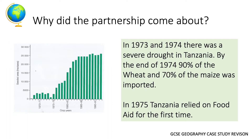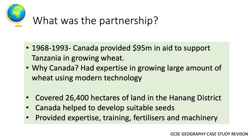So how did the Tanzania wheat program partnership come about? In the 1970s there was a severe drought in Tanzania, and crop yield was really low. After this drought, in 1974, 90% of wheat and 70% of maize was imported, which was costing Tanzania a lot of money. In 1975, Tanzania relied on food aid for the first time. This partnership ran from 1968 to 1993.